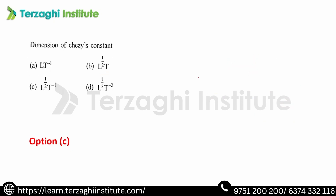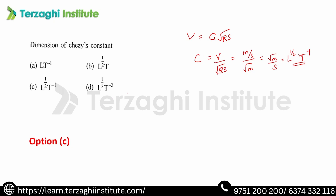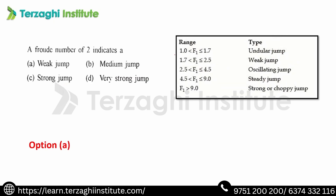Dimensions of Chezy's constant C: Chezy's formula is V = C√(RS). So C = V / √(RS). V has units of meters per second, R has units of meters, and S is dimensionless. This gives C the dimensions of L^(1/2) T^(-1), which is option C.